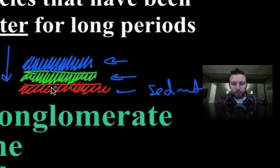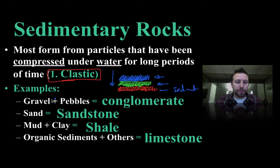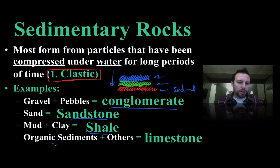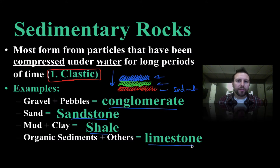When we keep piling more and more material on top, there's pressure, and that pressure forces down on these layers helping them become sedimentary rocks. Some examples of clastic sedimentary rocks: gravel and pebbles form conglomerates, sand forms sandstone, mud and clay form shale, and organic sediments and other materials form limestone. There are a number of different clastic sedimentary rocks.